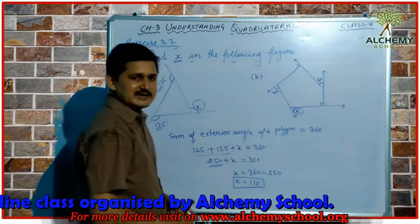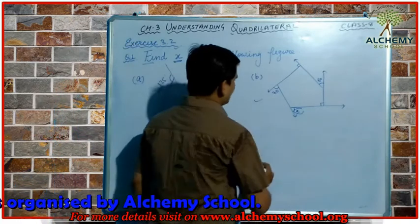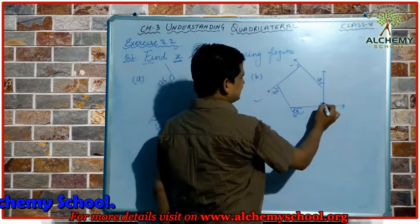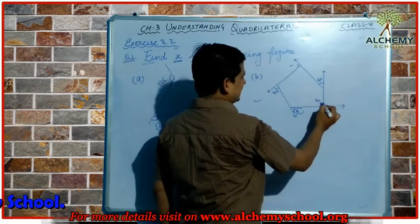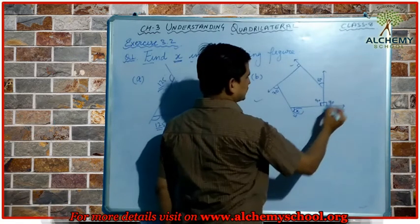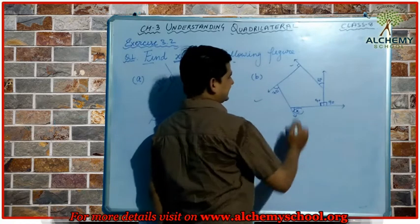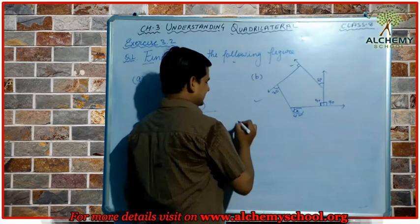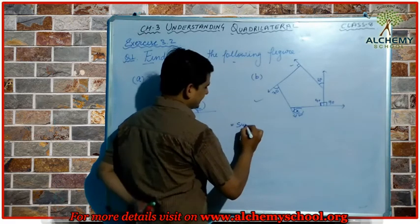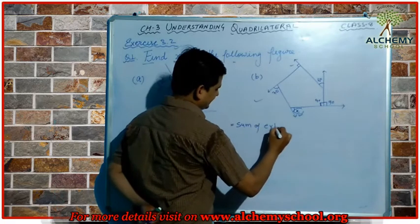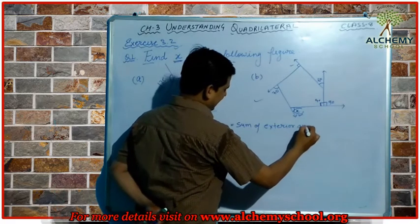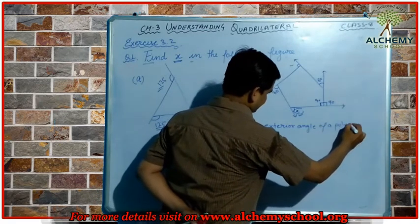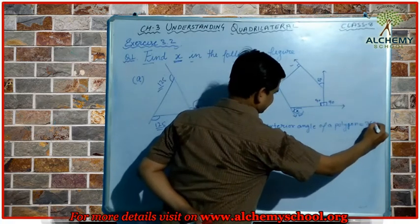Let's see the second figure. When we observe the given angles, we find that one angle is 90 degrees. Since the interior angle is 90 degrees, the corresponding exterior angle is also 90 degrees. We have all angles and one unknown angle x. Applying the same formula: sum of exterior angles = 360 degrees.